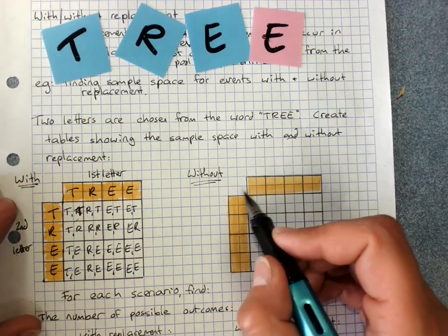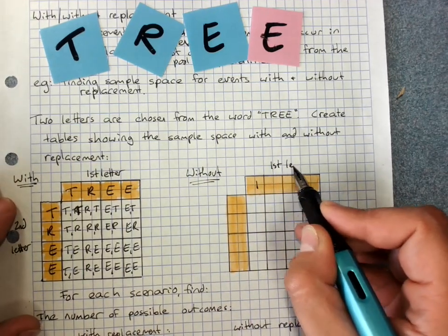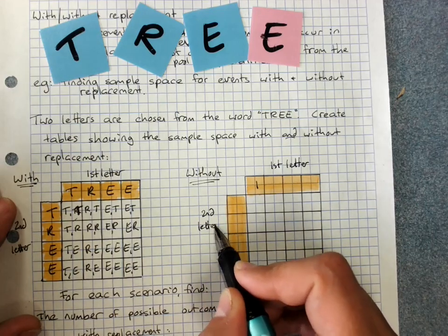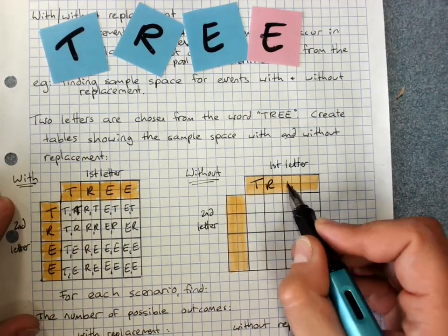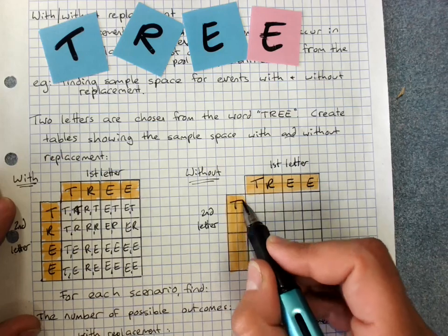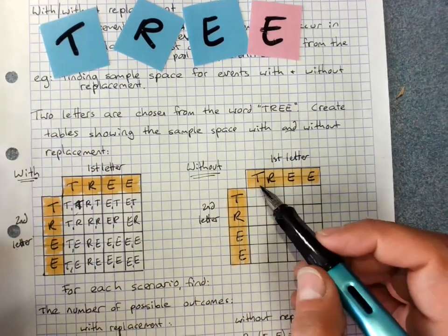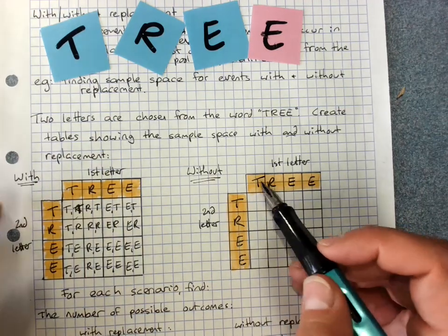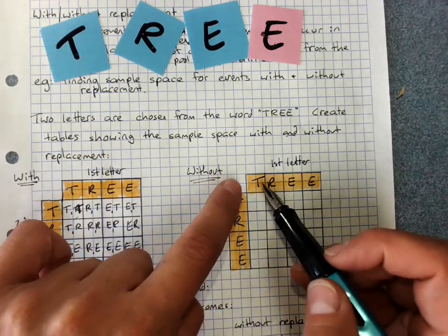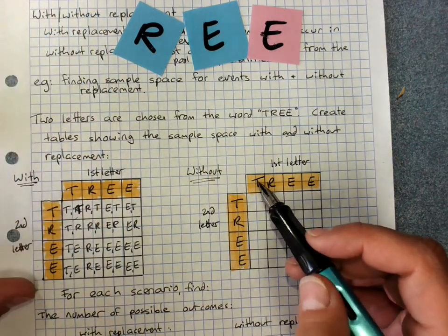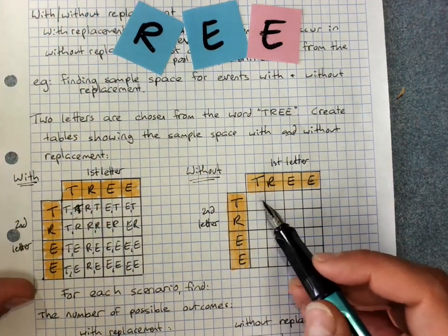Without replacement, we still have our first letter and our second letter. We still have the options of T, R, E, E. And we still have T, R, E, E as our options here. Because what we then need to do is say, alright, if our first letter was T, great. Now, for the second letter, T is no longer an option.